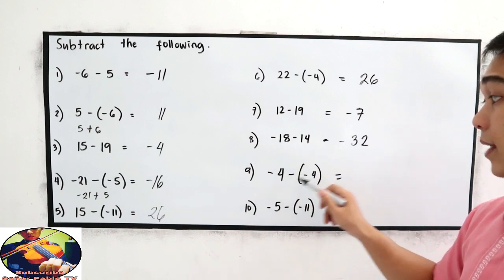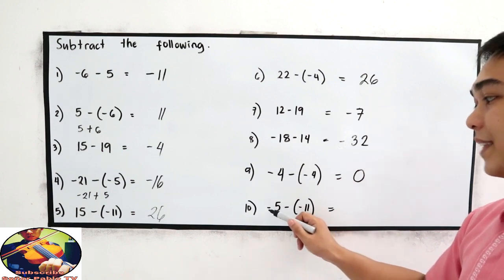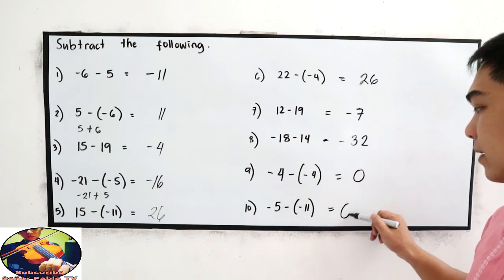Negative 4 plus 4, this will become 0. Now we have negative 5 plus 11, positive 6.